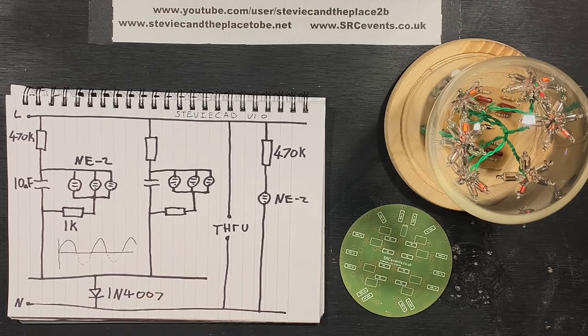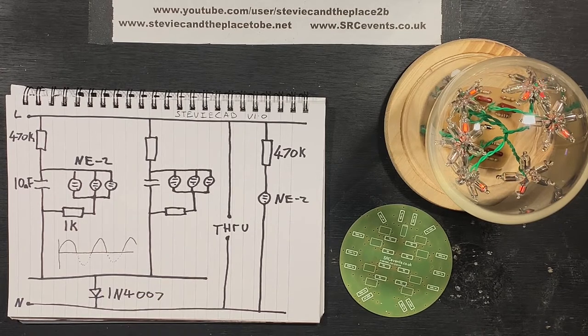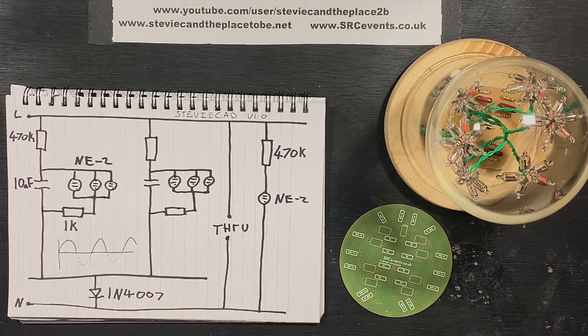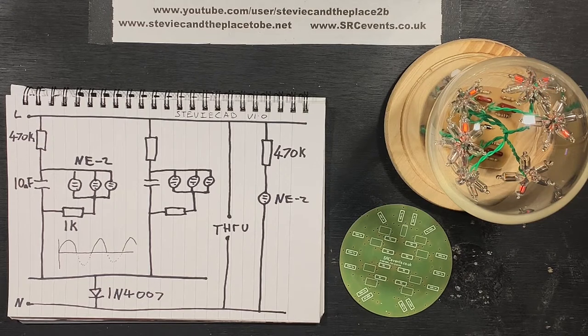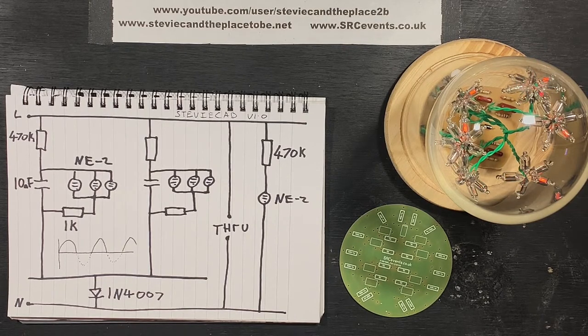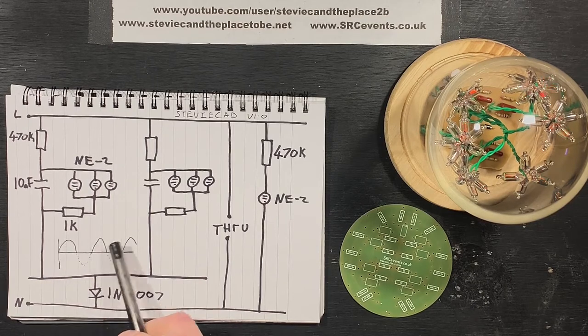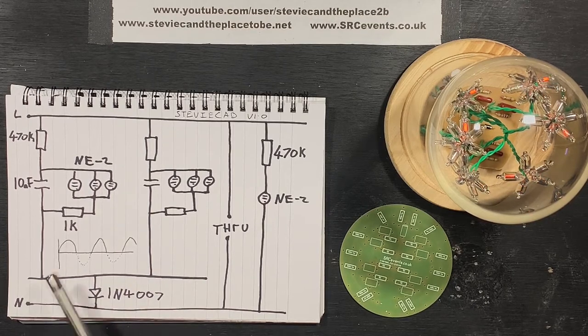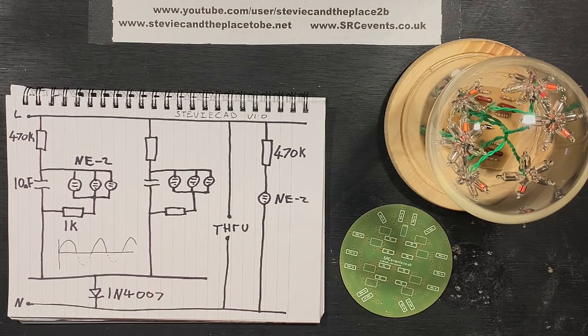After each pulse of the sine wave has charged the capacitor to the neon strike voltage of about 90 volts, one random neon strikes which prevents any others from lighting at that moment. This process then repeats on each pulse of the sine wave. There's a 1k resistor in here to reduce the strain on the lamps.